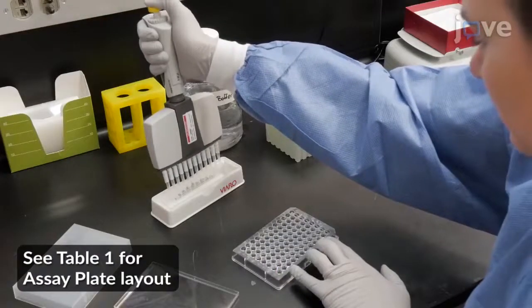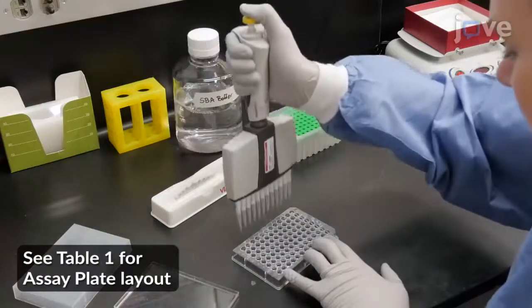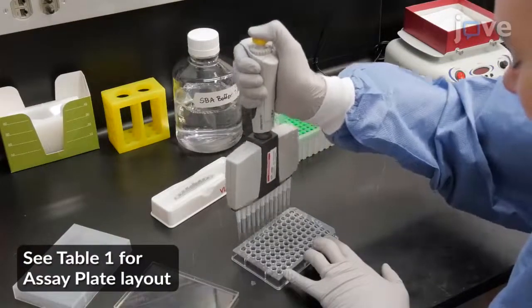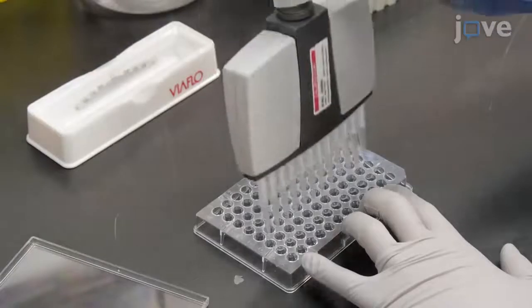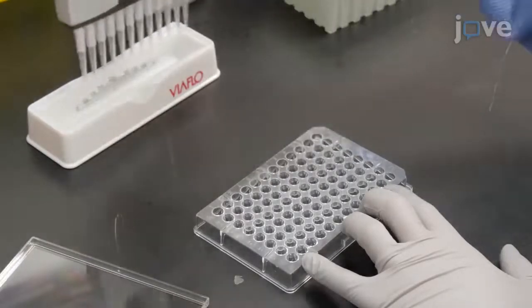Obtain an assay plate and add 20 µL of assay buffer to columns 1-12 of rows A through G. Add 20 µL of assay buffer to columns 1 and 2 of row H.